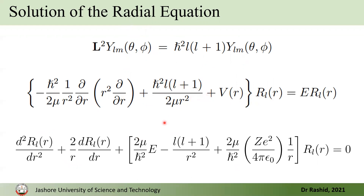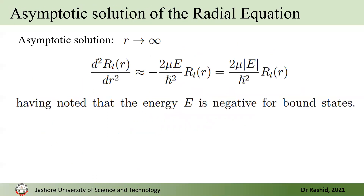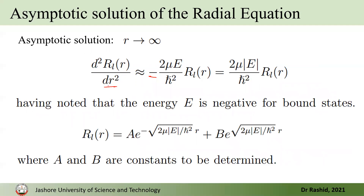As r goes to infinity, only two terms remain in the radial equation, which simplifies the analysis. We first focus on the asymptotic solution as r → ∞. In that limit we have a second-order differential equation with two terms. Since E is negative, we write it as the modulus. We then write a trial solution of the form A·e^(−κr), where κ is a constant related to the energy.